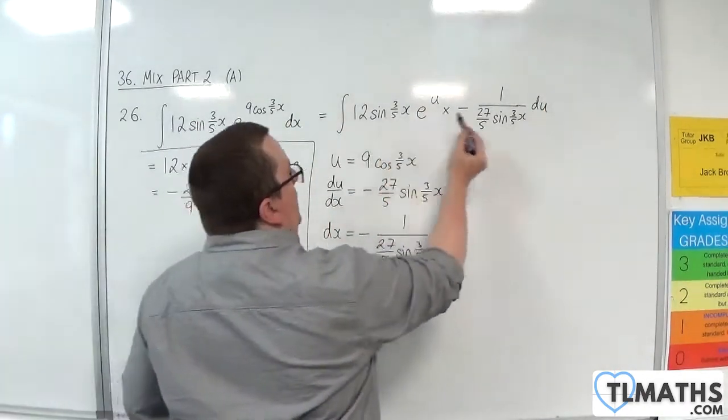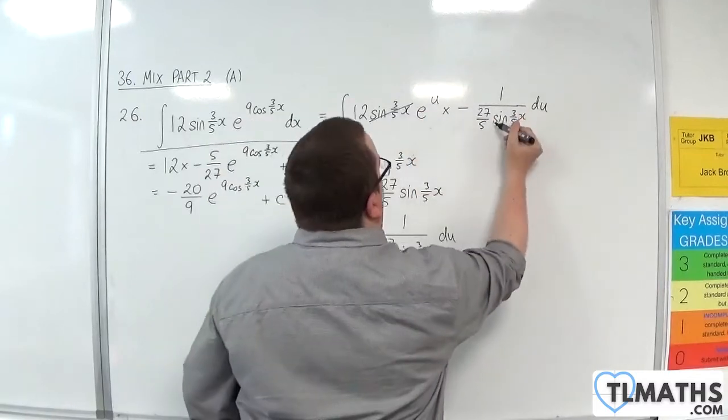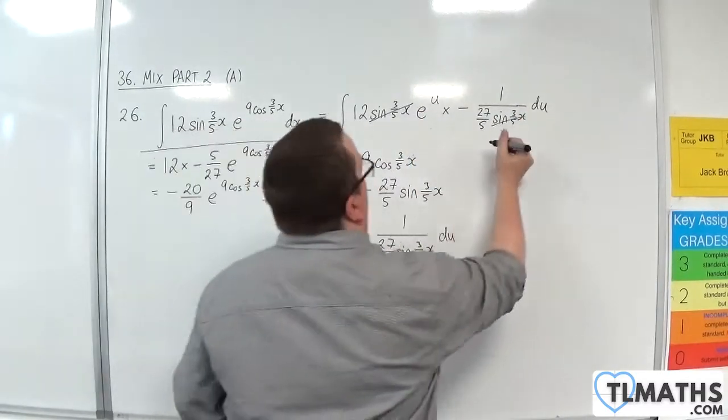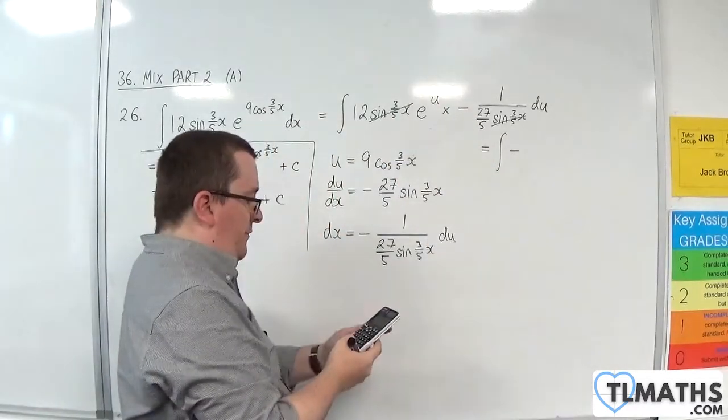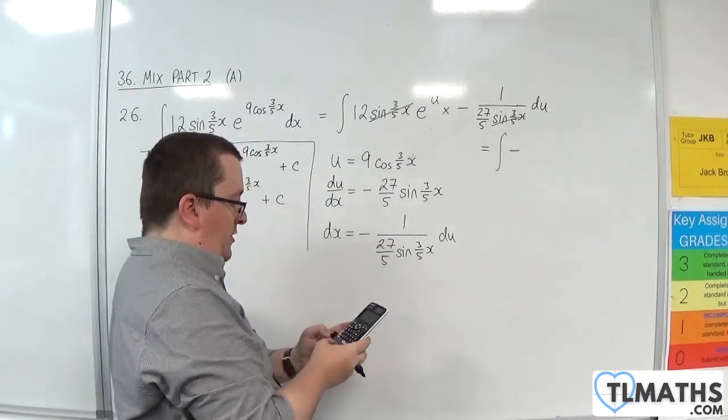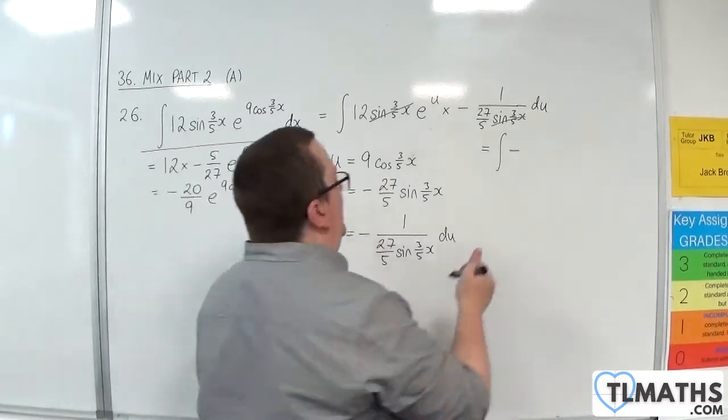Now, the sine of 3/5 x cancel. They're gone. So I've got the integral of minus 12 divided by 27/5. 12 divided by 27 over 5 is 20 over 9, e to the u du.